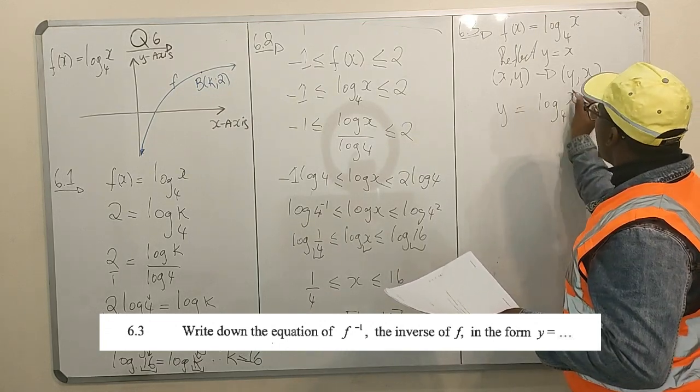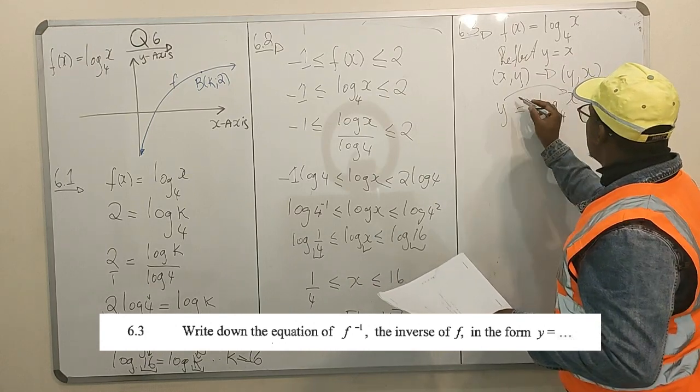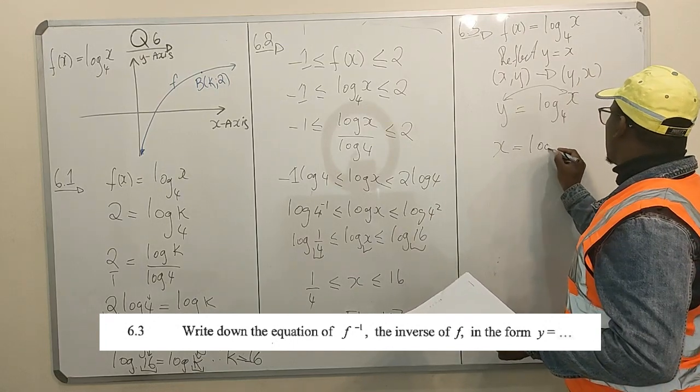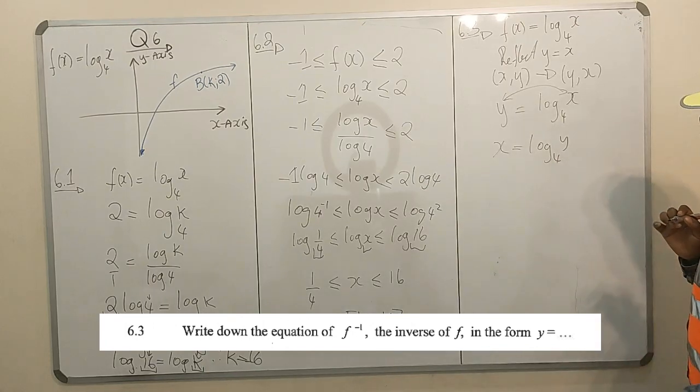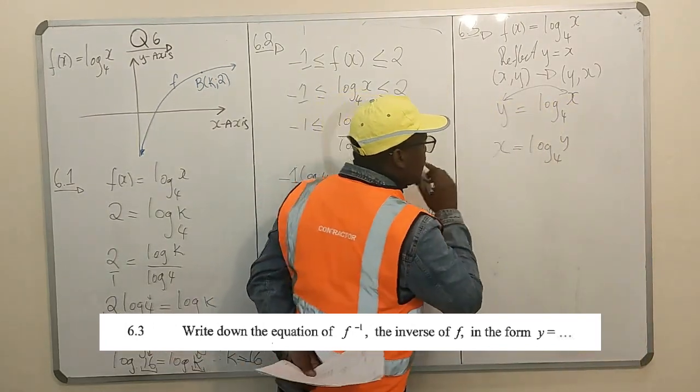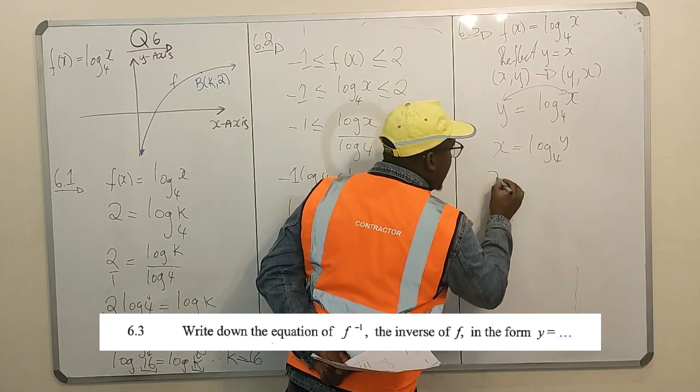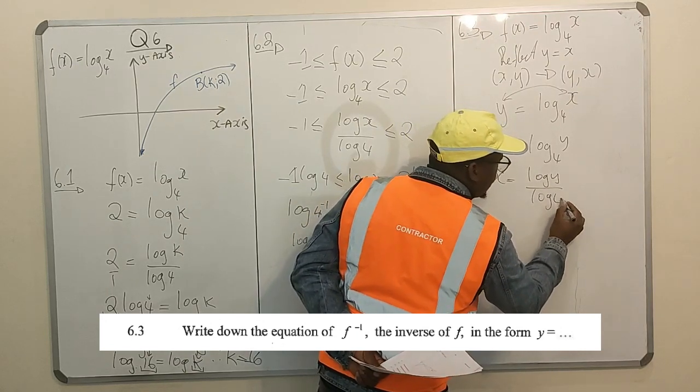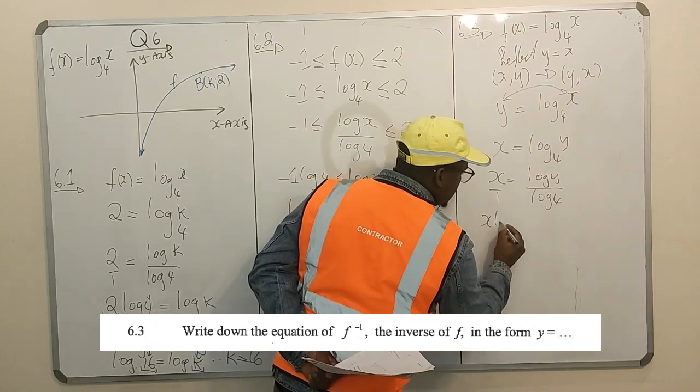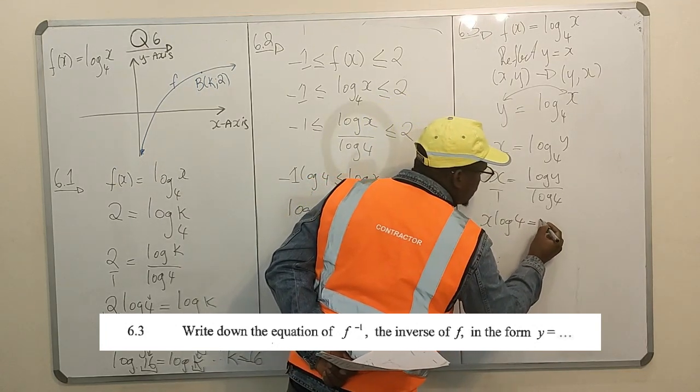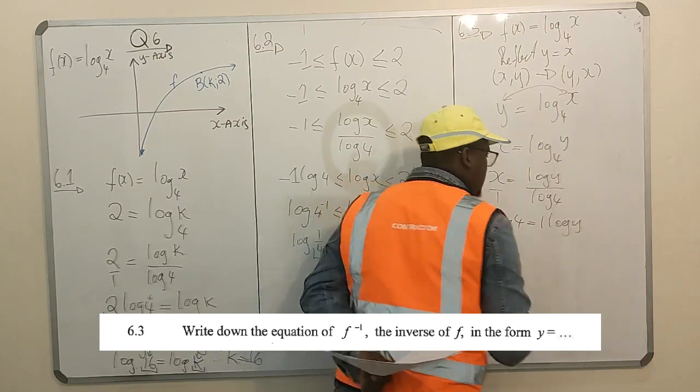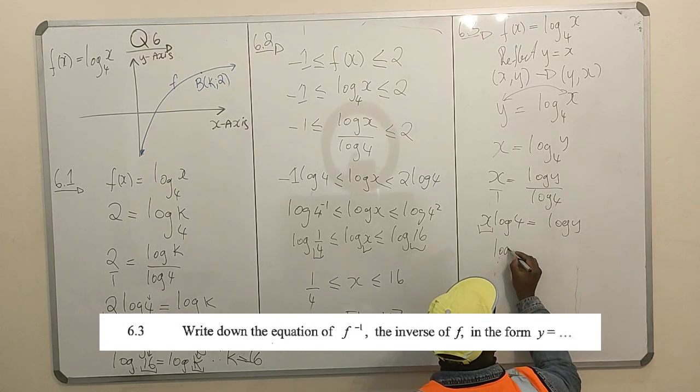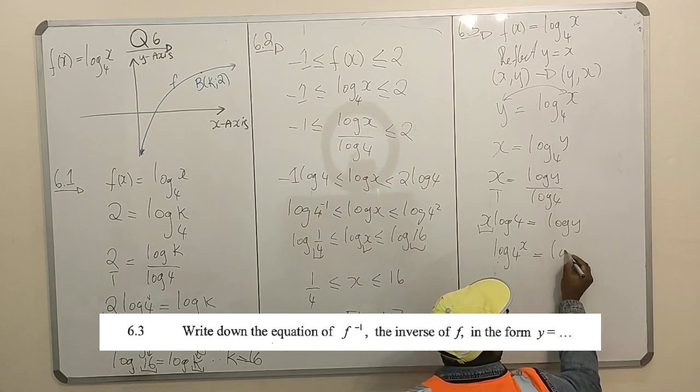You have y equals log₄(x). To apply this transformation, you swap x and y. Your x comes here, your y comes there. Then you have x equals log₄(y). This is log y over log 4. Cross multiply: x log 4 equals log y. This is log 4ˣ equals log y.